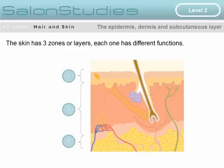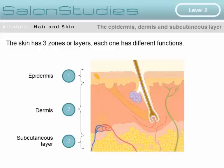The basic structure of hair and skin. The skin has three zones or layers, and each one has different functions. In the uppermost layer we can see the epidermis, the outermost layer of the skin. In the middle, in Zone 2, we see the dermis, which is the largest layer of the skin, and which the hair follicle extends down into. At the lowest layer we see the subcutaneous layer, Zone 3.